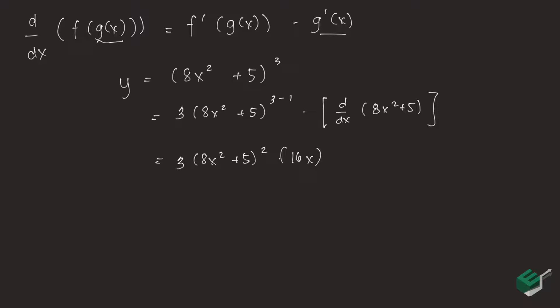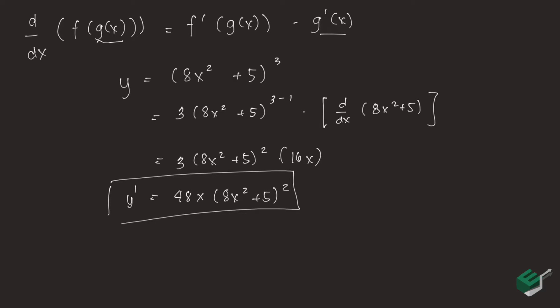Simplifying, we can multiply 16x and 3, giving us 48x times 8x squared plus 5, squared. This is our differentiated function, and this is how to use the chain rule.